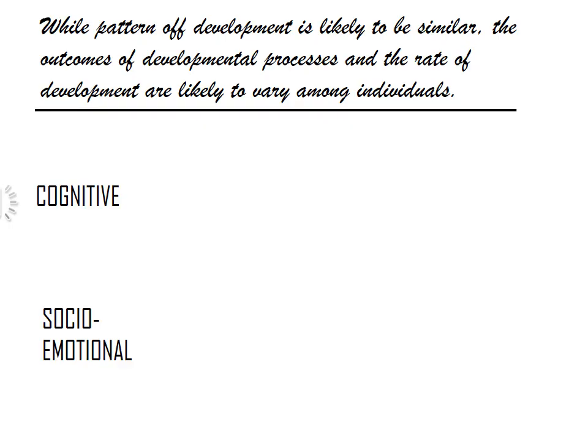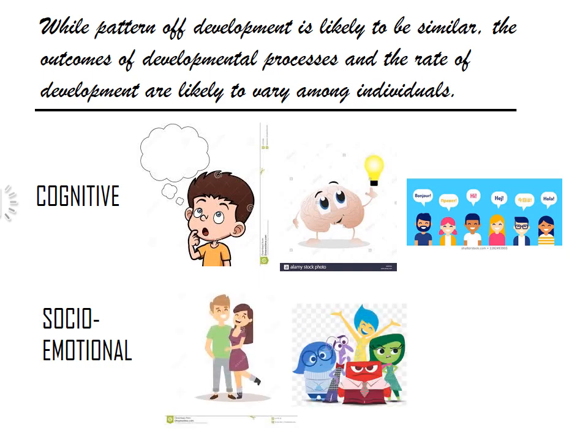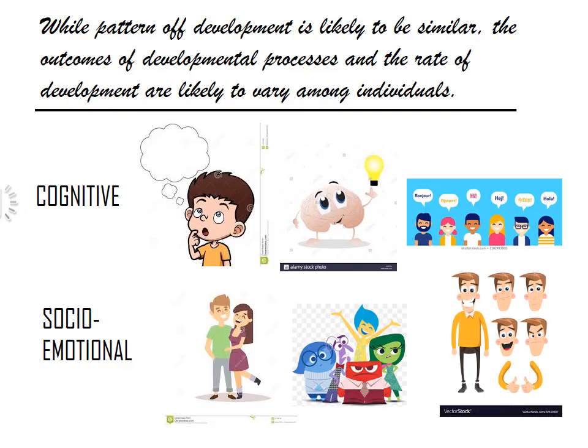Cognitive development involves changes in the individual's thought, intelligence, and language. Naskiel and Ken develop from mere sounds to a word, the word becoming two words, the two words becoming a sentence, and they would move on to memorizing their first prayer. Socio-emotional processes include changes in the individual's relationships with other people, changes in emotions, and changes in personality. As babies, Naskiel and Ken responded with a sweet smile when affectionately touched, or frowned when displeased, and even showed temper tantrums when they could not get or do what they wanted.